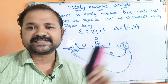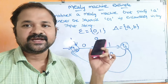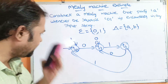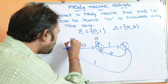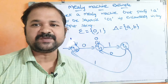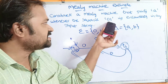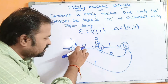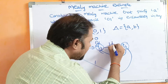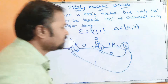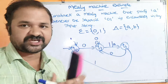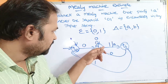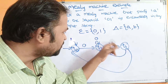Now we have to make this into a Mealy machine. A Mealy machine means each output depends upon the present state as well as the present input symbol. We have to write the output on each transition. The output alphabet contains two symbols: A and B. If the sequence 0,1 is encountered — that is, when Q1 on 1 transitions to Q2 — then we display output A.